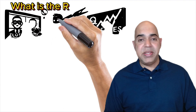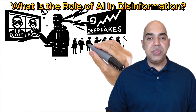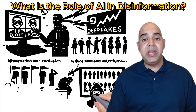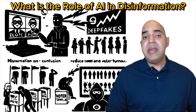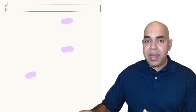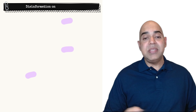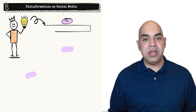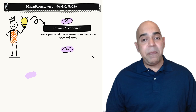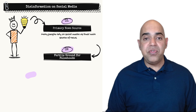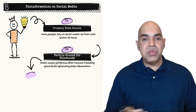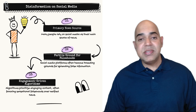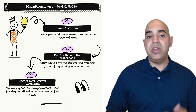What is the role of AI in disinformation? AI can contribute significantly to the spread of disinformation by enabling the generation of realistic news articles, social media posts, and videos that appear legitimate but are entirely fabricated. Social media platforms are primary sources of news for many people, making them a fertile ground for the spread of false information. Social media algorithms often prioritize content that generates high engagement, inadvertently favoring sensational and polarizing disinformation over verified news.